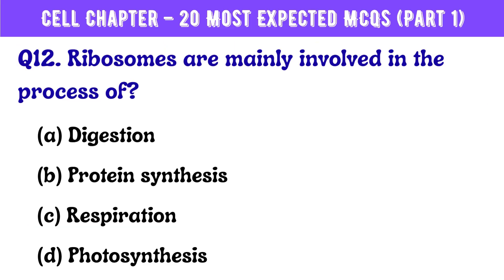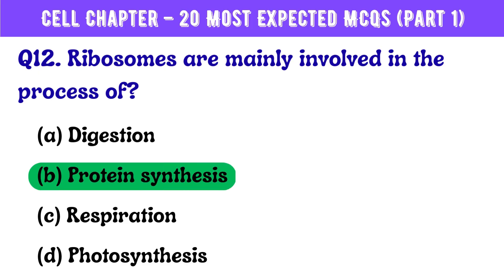Question number 12. Ribosomes are mainly involved in the process of? Correct answer is option B: Protein synthesis.